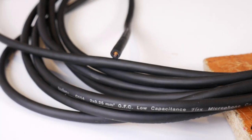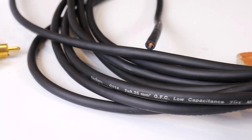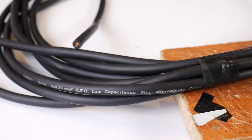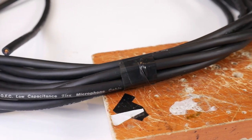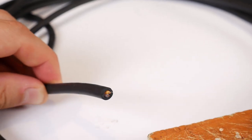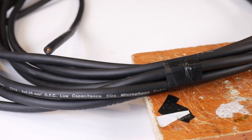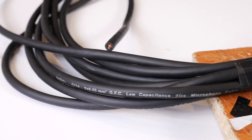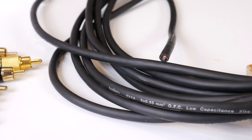To make this LFE subwoofer cable, you will need a few components. Firstly, a guitar or microphone shielded high quality cable that has at least 2 wires. The better the wire you get, the better the cable in the end. The Tasker brand I found costs around $2 a meter.